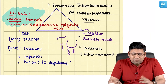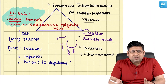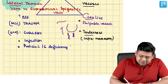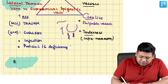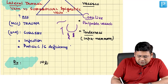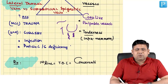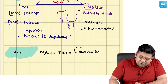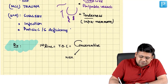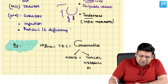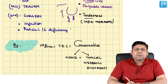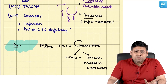Let us talk about management. The treatment of choice is conservative — you counsel the patient not to worry. Conservative management includes NSAIDs plus topical heparin-containing ointments, such as Thrombophob gel.